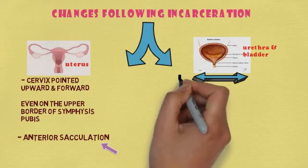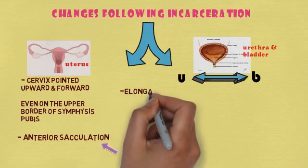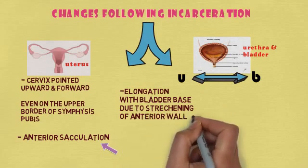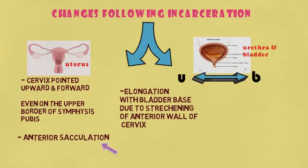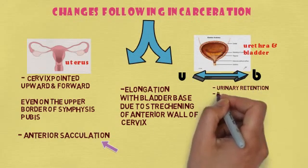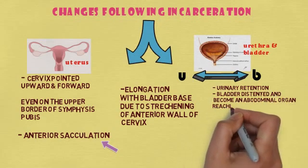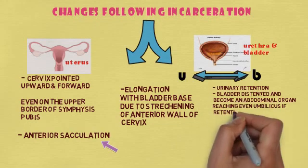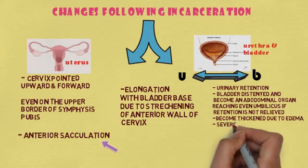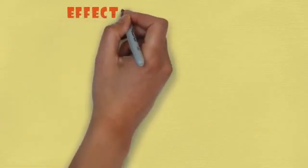Next are the changes in the urethra and bladder. In the urethra, it becomes elongated along with the bladder base due to stretching of the anterior wall by the cervix. In the bladder, there is a chance of urinary retention, and as a result the bladder gets distended and becomes an abdominal organ reaching even the umbilicus. If retention is not relieved, the bladder wall can become very thickened due to edema, with a chance of severe cystitis or pyelonephritis.